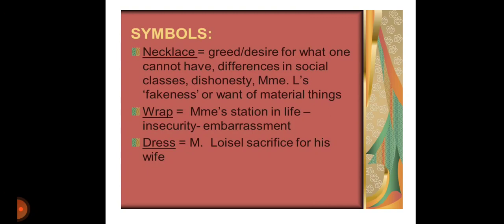Let us talk about the symbols used by the author. The necklace is the symbol of greed — it's a symbol of desire for what one cannot have, differences in social classes, and dishonesty, due to Madame Loisel's want of material things. It was the cause of her ruin. The next symbol is the wrap, which represents Madame Loisel's station in life and is a symbol of insecurity and embarrassment. The dress is a symbol representing Mr. Loisel's sacrifice for his wife, as he had saved money for his personal wishes and gave it to his wife to buy the dress.